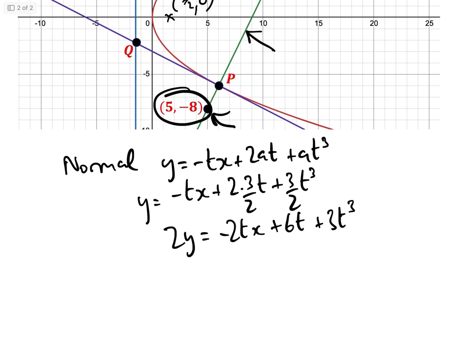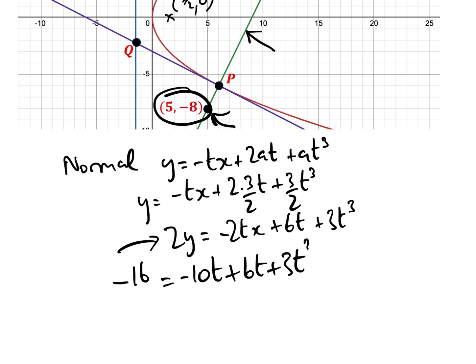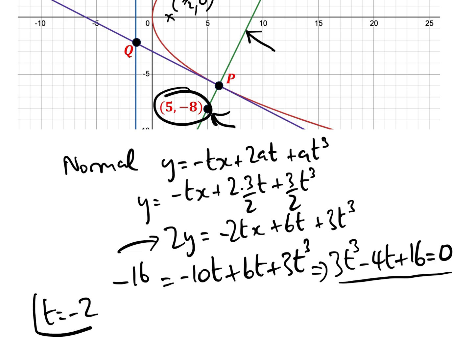Since the normal passes through (5, −8), we substitute those coordinates in: −16 = −10t + 6t + 3t³, which implies 3t³ − 4t + 16 = 0. Now we need to solve this cubic for t.